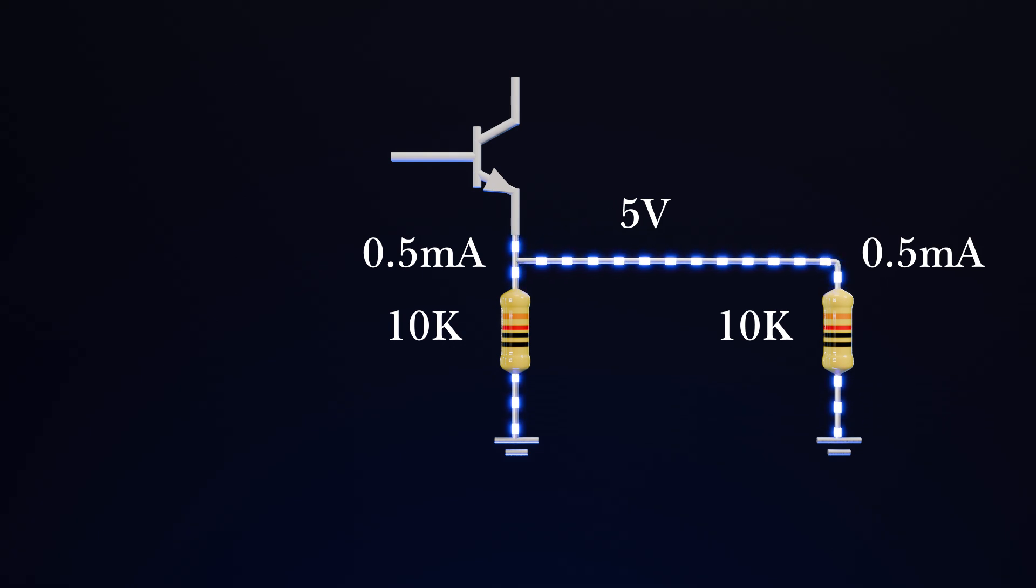To solve this, we need to increase the current coming out of the emitter from 1 milliamp to 2 milliamps. This way, 1 milliamp of current will flow through this resistor, giving us 10 volts. Now, if the load resistance changes, the current demand to keep the voltage at 10 volts will also change.